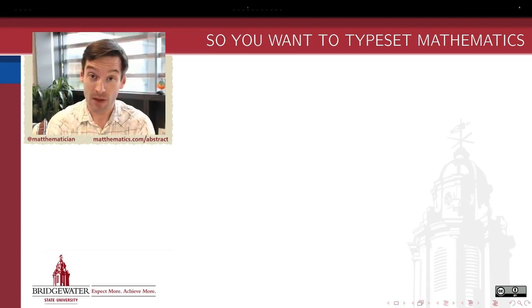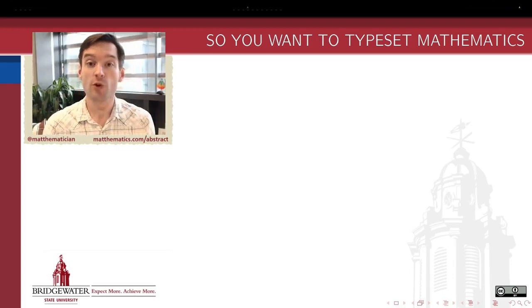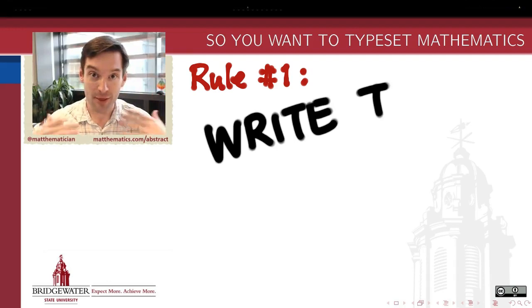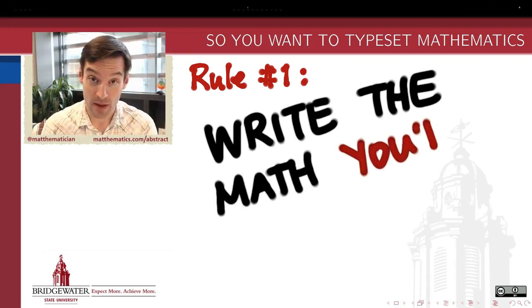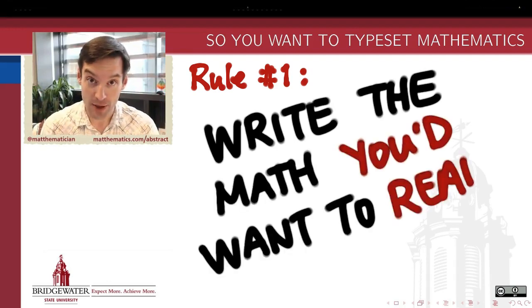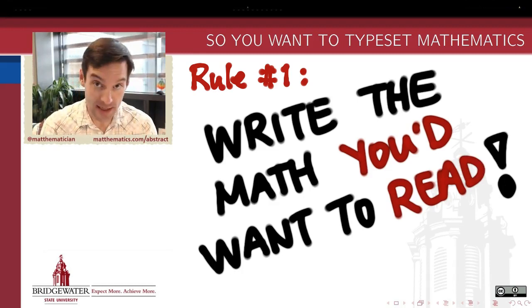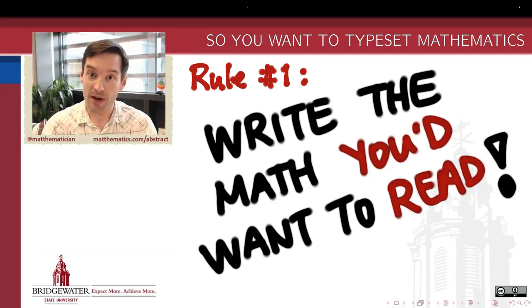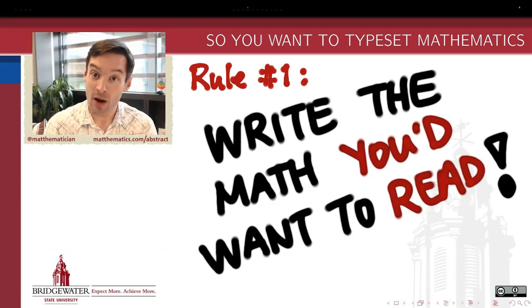Well that's what the next couple of videos are about. If you want to typeset mathematics, rule number one is to always write the math that you'd want to read. Mathematical writing is challenging because mathematical reading is challenging. The conventions of our field often inform a very terse style of writing where we don't use a large number of words to represent a lot of thoughts.